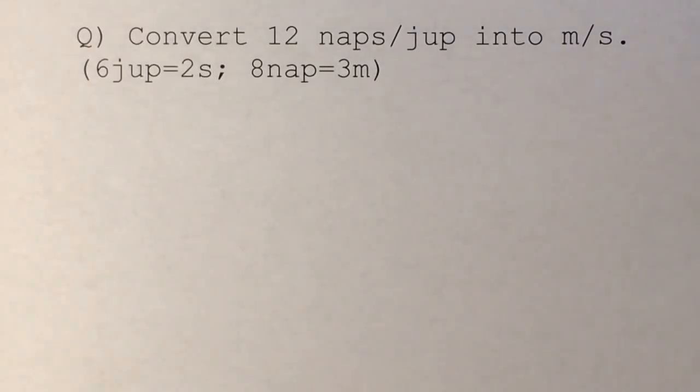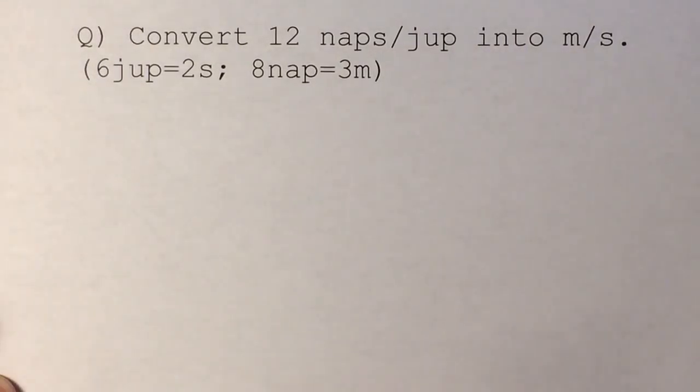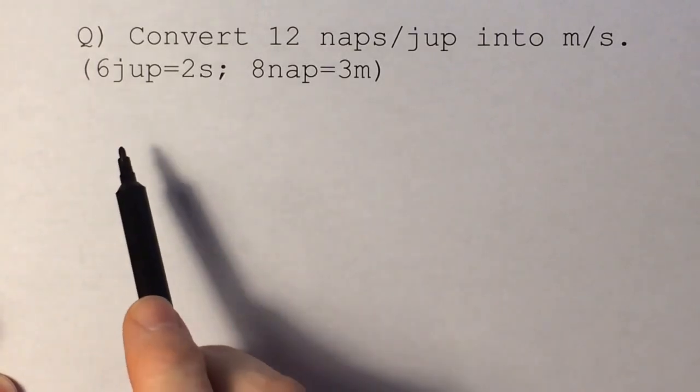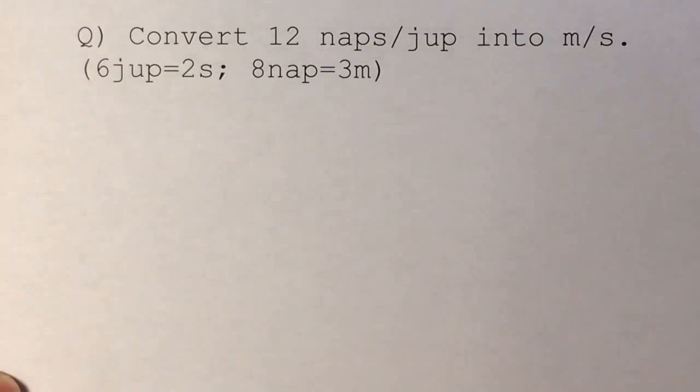In this question, it's a conversion question, and we say convert 12 naps per jop into meters per second. And we're given the conversion factors: 6 jops equals 2 seconds, and 8 naps equals 3 meters.